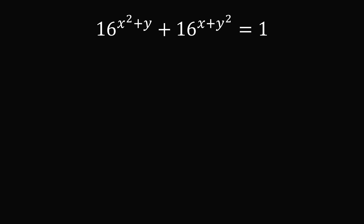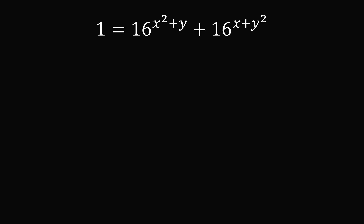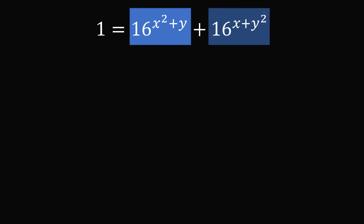This is an extremely challenging problem, and I admit I was not able to solve it. How can we work it out? The first thing to notice is that for real numbers x and y, 16 to the power of some real number will always be a positive number. So these two terms we're adding will be greater than zero.